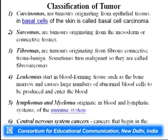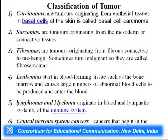Leukemias are blood cancers originating from bone marrow blood cells. Lymphomas and myelomas originate from lymphatic tissue — blood and the lymphatic system are involved — so I would call them cancers of the immune system. That means the immune system is also subject to forming cancers. Cancer can also impact the central nervous system, affecting the spinal cord or brain.